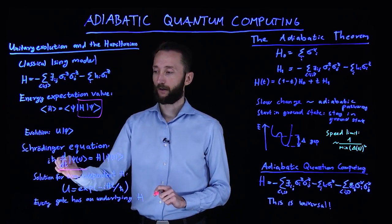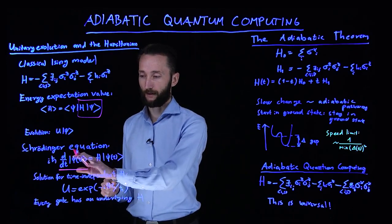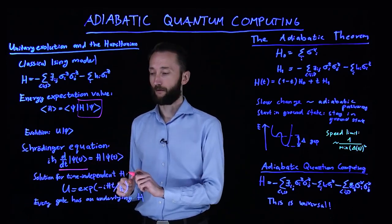Then you have the imaginary number here and the reduced Planck constant. But the main part is that the temporal evolution depends on the Hamiltonian.